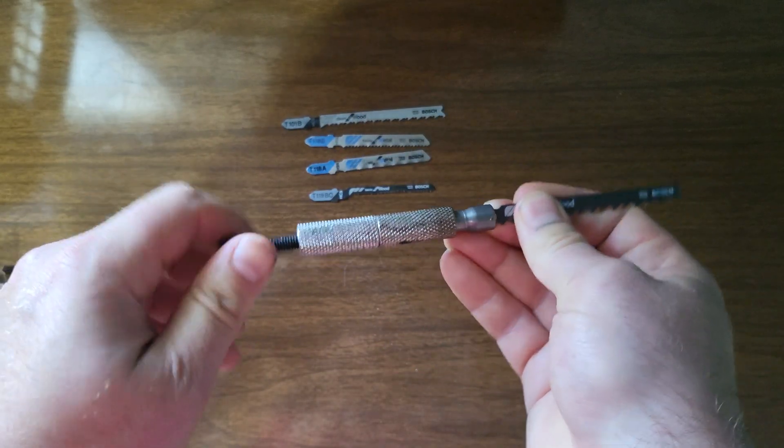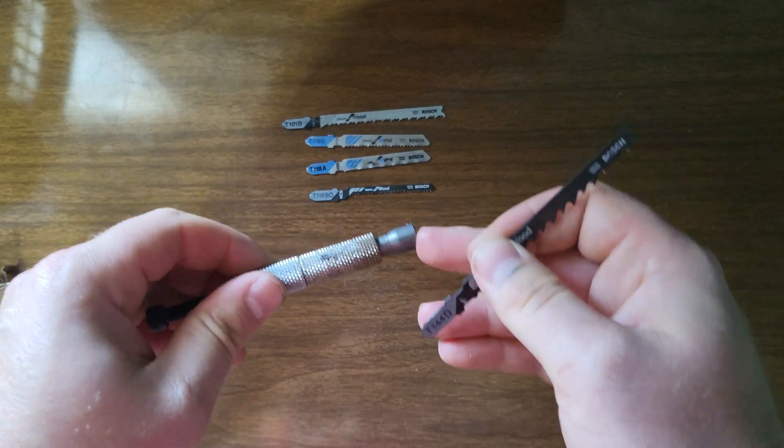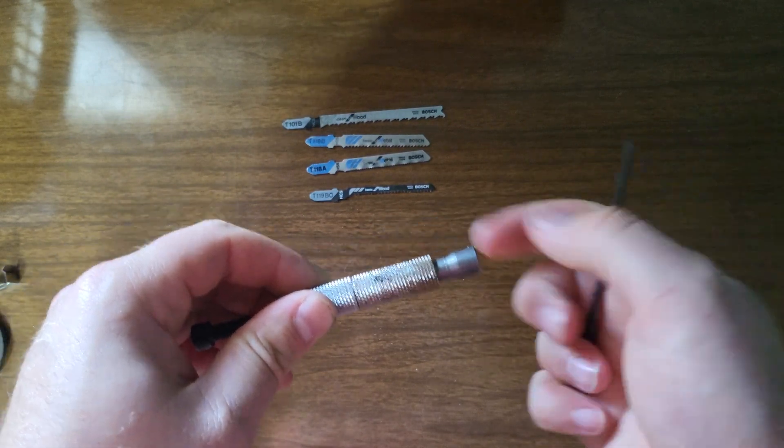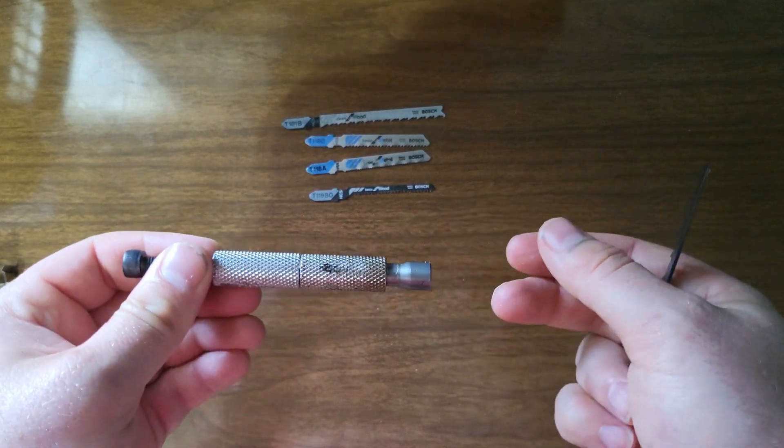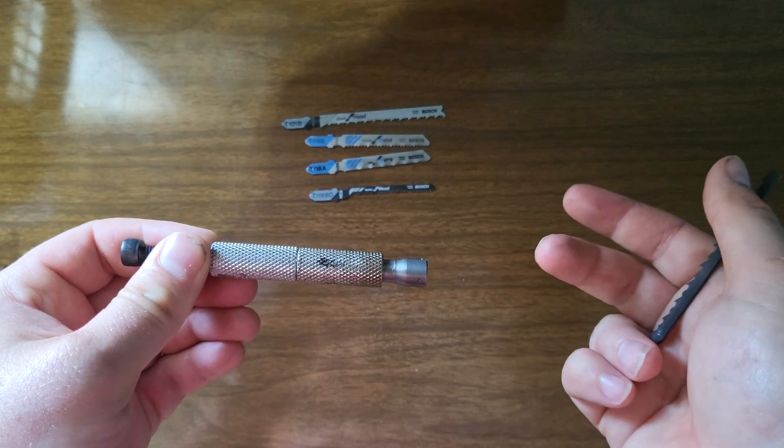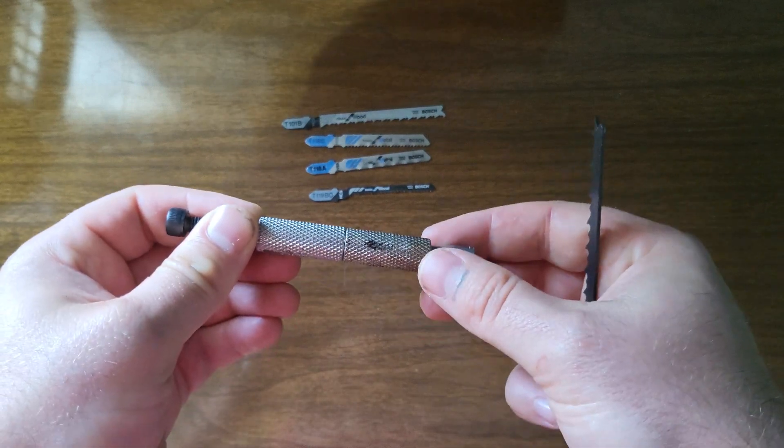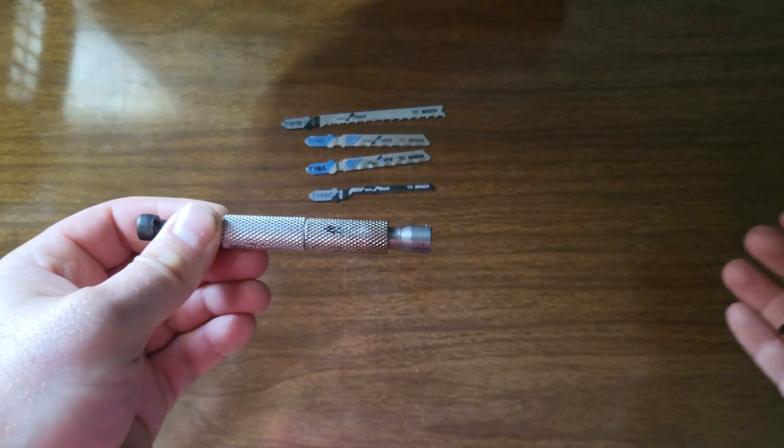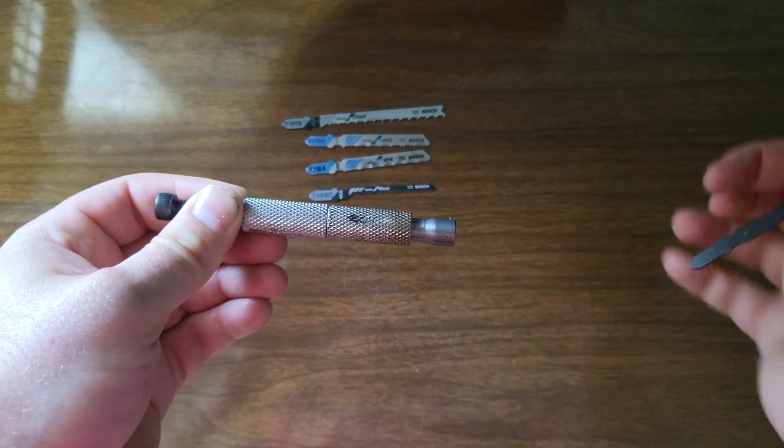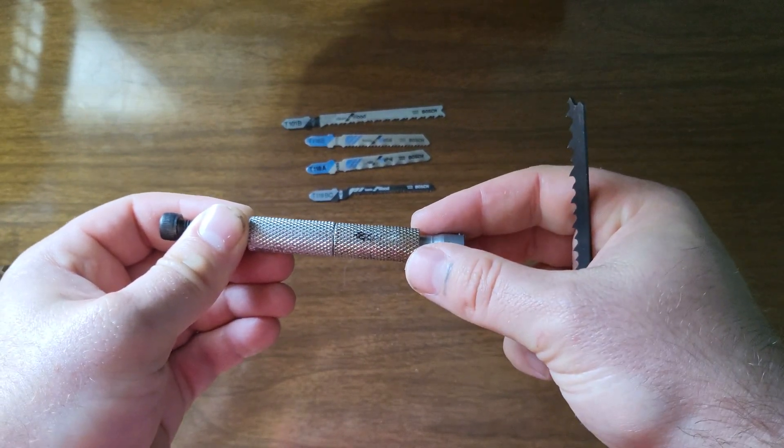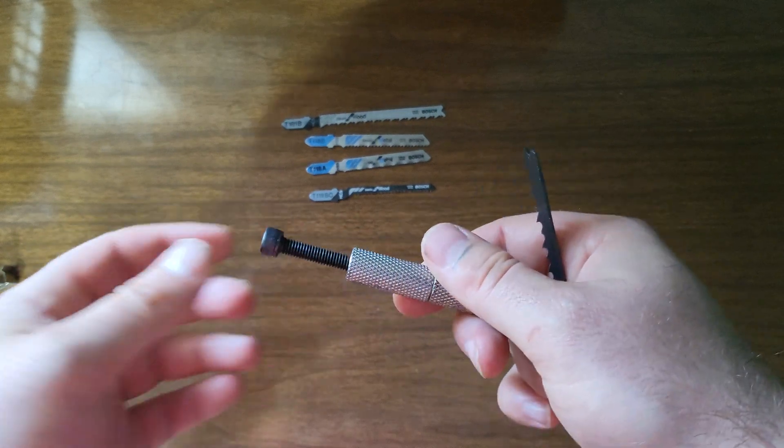So basically this right here is a lifting rod from a Bosch jigsaw. You might be able to find one used off of an old Bosch jigsaw or you can get it off eBay, that's how I got it. I will put the part number in the description so you can check that out, as well as the other parts that you need.